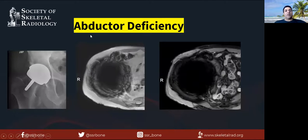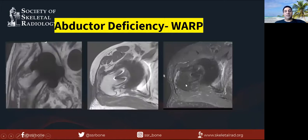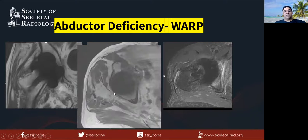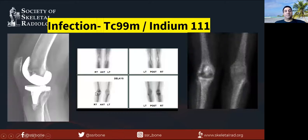One can also find abductor deficiencies as a cause of symptoms. Here's a metal-on-metal prosthesis with a lot of artifact on frequency-selective images. With the WARP sequence, you can see the areas around the metal — these look okay with no particle disease — but the abductors are missing. The gluteus minimus is absent and part of the medius is missing, representing abductor tears with muscle atrophy.